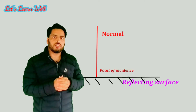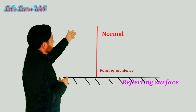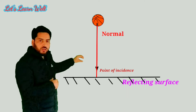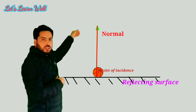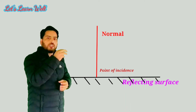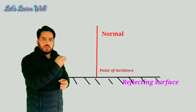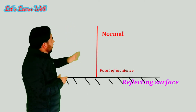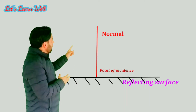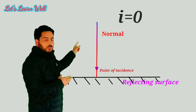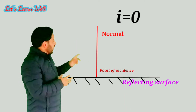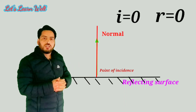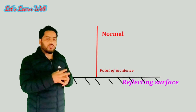We can explain this second law of reflection with the help of a ball. Suppose this is the normal, and we throw a ball from the top of the normal towards the point of incidence. On reaching the point of incidence, the ball will move up along the normal. Similarly, when we throw light from the top of the normal towards the point of incidence, it will get reflected along the normal. In that case, the angle made by the incident ray with the normal equals 0, and the angle made by the reflected ray with the normal is also 0.